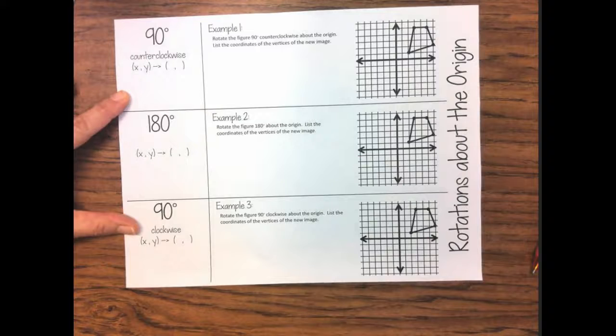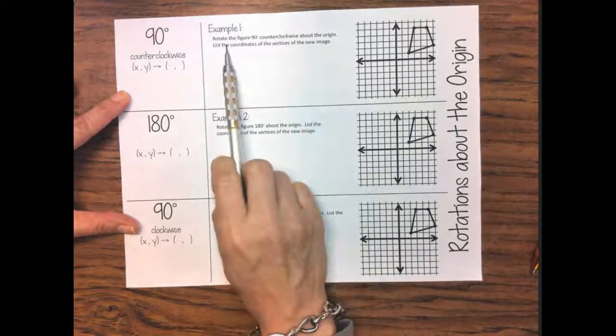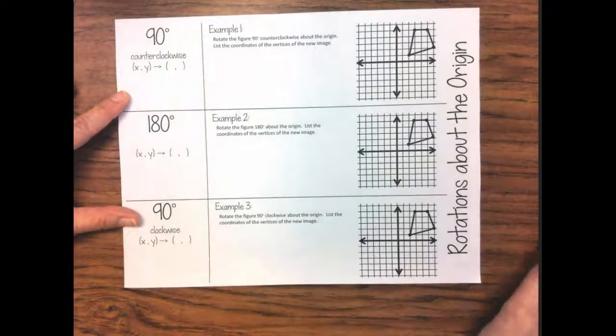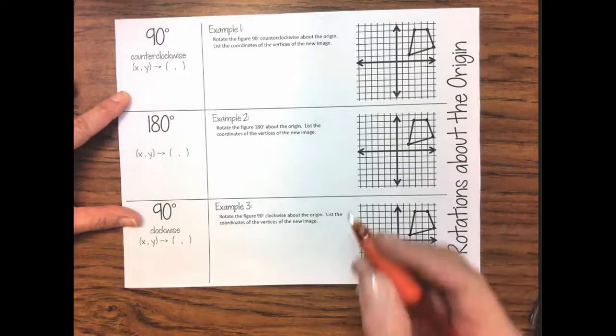So let's go ahead and get started with example one. Rotate the figure 90 degrees counterclockwise about the origin. List the coordinates of the vertices of the new image.